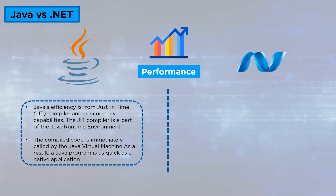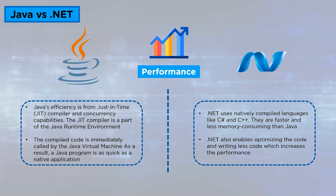Performance: Java's efficiency comes from its just-in-time compiler and concurrency capabilities. The just-in-time compiler is part of the Java runtime environment, and the compiled code is immediately called by the Java Virtual Machine. Compiling does not require extra processing time or memory, so a Java program is as quick as a native application. Whereas in .NET, natively compiled languages like C# and C++ are faster and less memory-consuming than Java. .NET also enables optimizing code and writing less code, which increases performance and means less effort on maintenance and easier debugging.